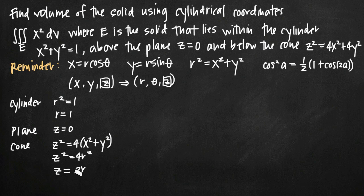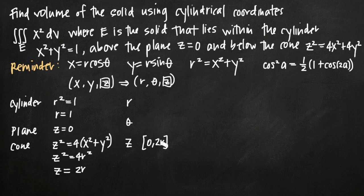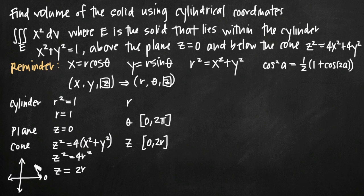Now let's come up with limits of integration for r, theta, and z. Our solid lies above z equals 0 and below the cone z equals 2r, so the limits of integration for z are 0 to 2r. For theta, in a cylindrical coordinate system theta always goes from 0 to 2pi — we go all the way around the polar coordinate system back to where we started. So the limits of integration for theta are 0 to 2pi.